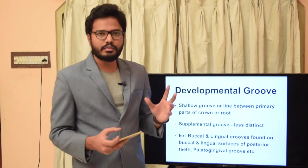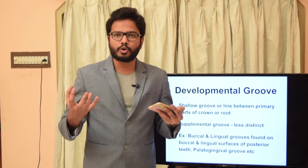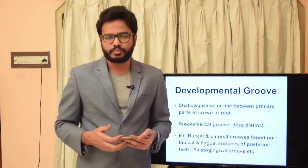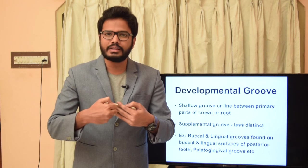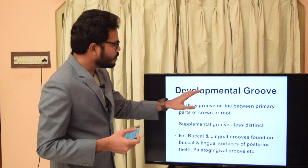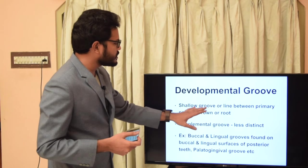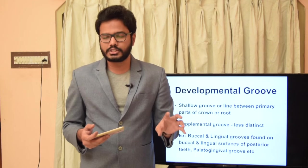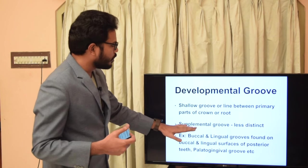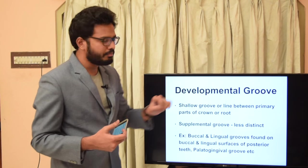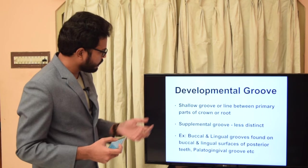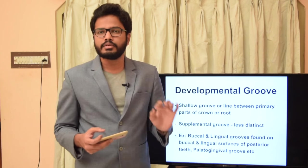At the developmental stage, different lobes contribute to crown formation. When these lobes perfectly coalesce they form a groove, whereas imperfect coalescence results in a fissure. A groove is a shallow linear depression between the primary parts of a crown or root, while a supplemental groove is less distinct. Examples include the mesiobuccal groove, distobuccal groove, and lingual groove in molars. Most commonly, palatolingual grooves occur in maxillary lateral incisors — that's very important.